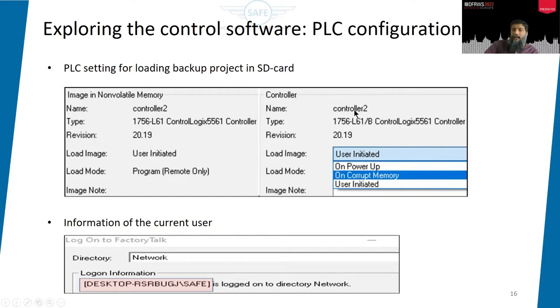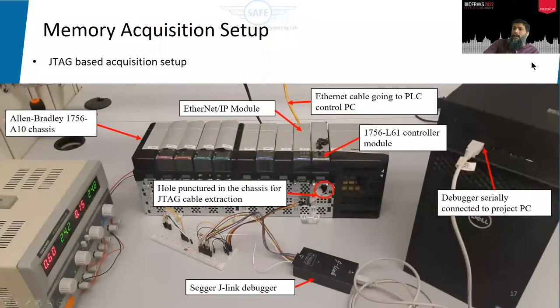The control software also provides information about the current user — via Factory Talk, the licensing server — telling us which username and machine is logged into a particular PLC. For memory acquisition, we reuse the hardware-based setup from our previous work: through the control PC via Ethernet we push a program, and through JTAG and a debugger we fetch the memory.